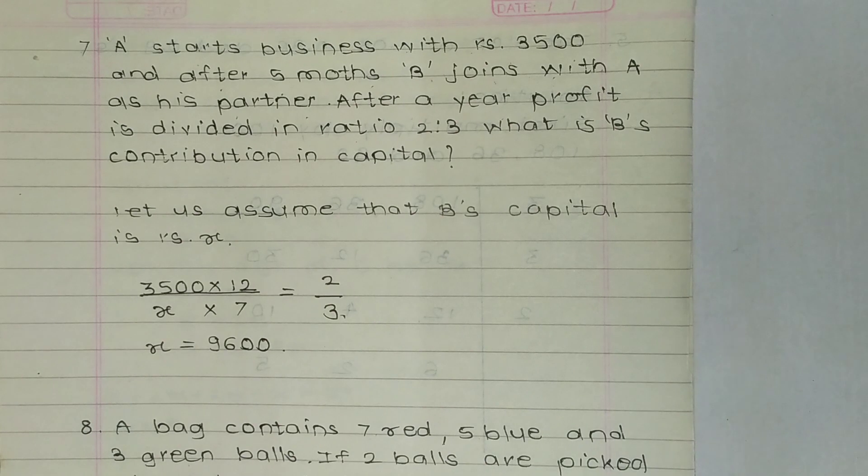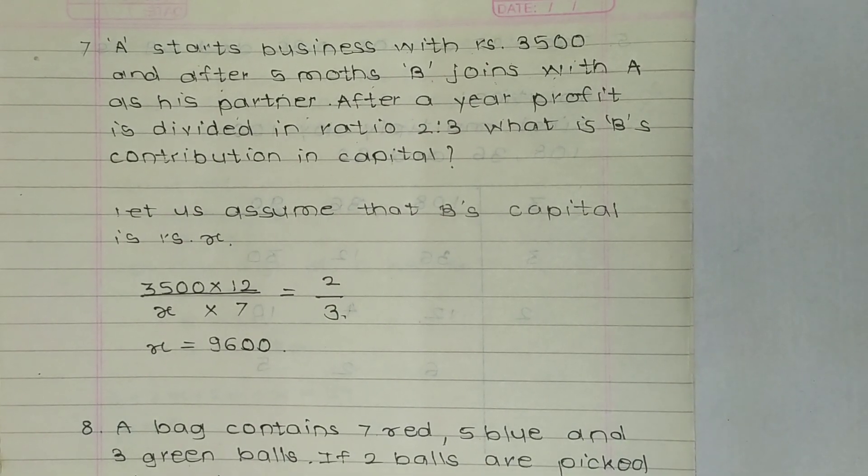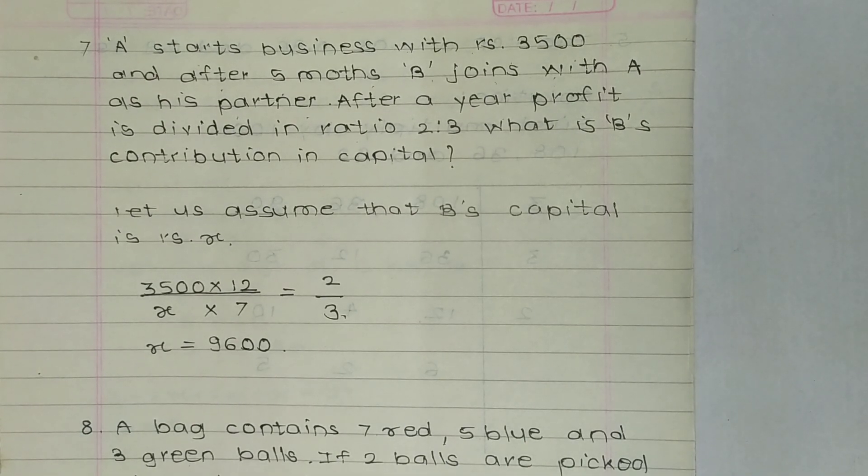Question 7: A starts business with rupees 3500, and after 5 months B joins with A as his partner. B is 5 months late. After a year, profit is divided in ratio 2:3. What is B's contribution in capital? Let us assume that B's capital is rupees x.